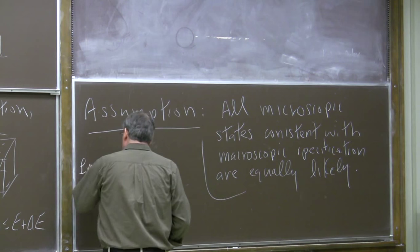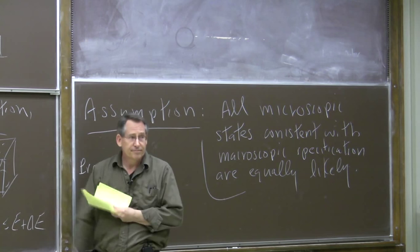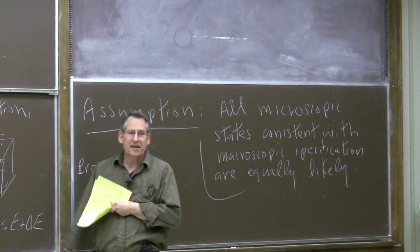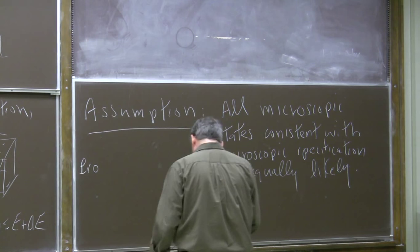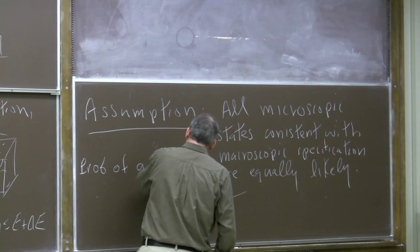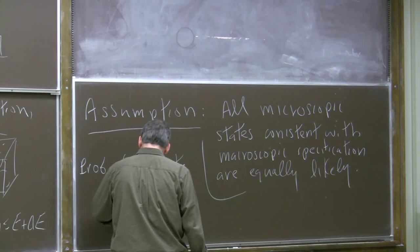All the microscopic states have an equal right to be the microscopic state of the system, as long as they're consistent with whatever it is we know or specify — like the total energy. We're pleading ignorance: we don't know anything about the microscopic state, so we might as well assume there's a uniform probability distribution over all the states. The probability of a state is just one over the total number of states.